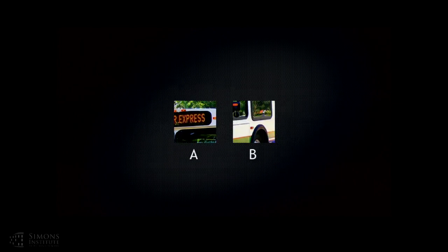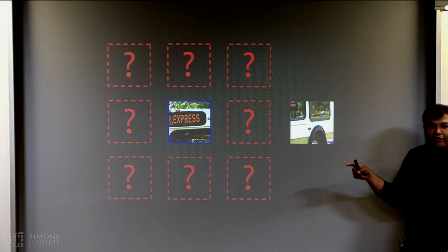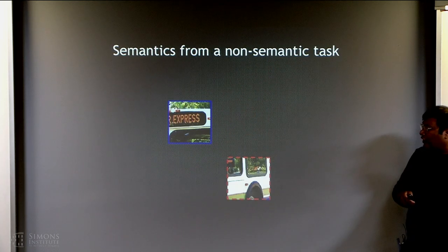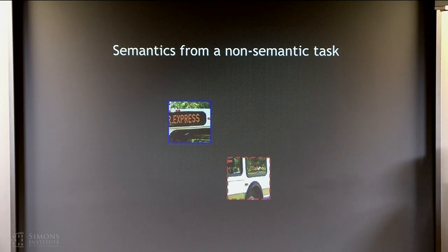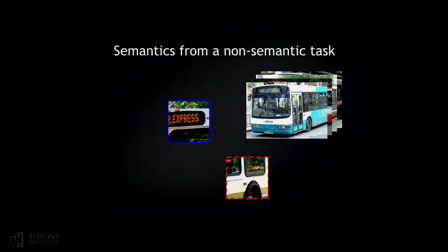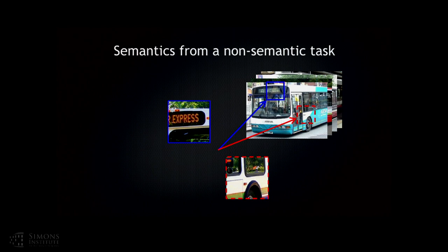So as a second step, we tried something simpler. Suppose you have two patches A and B, and you try to predict the relative spatial layout of these patches. I put the A patch in the middle, and B is in one of eight locations. Hopefully you can all solve this problem — the patch is coming from here. The way you solve this task is by associating patches with what you've seen in the past. You recognize this is the top of a bus, this is the bottom, and generally this is the relative spatial arrangement for buses. So even though the task is non-semantic, to solve it you have to use semantics — you have to understand this is a bus. You end up going via semantic representation to solve a non-semantic task.